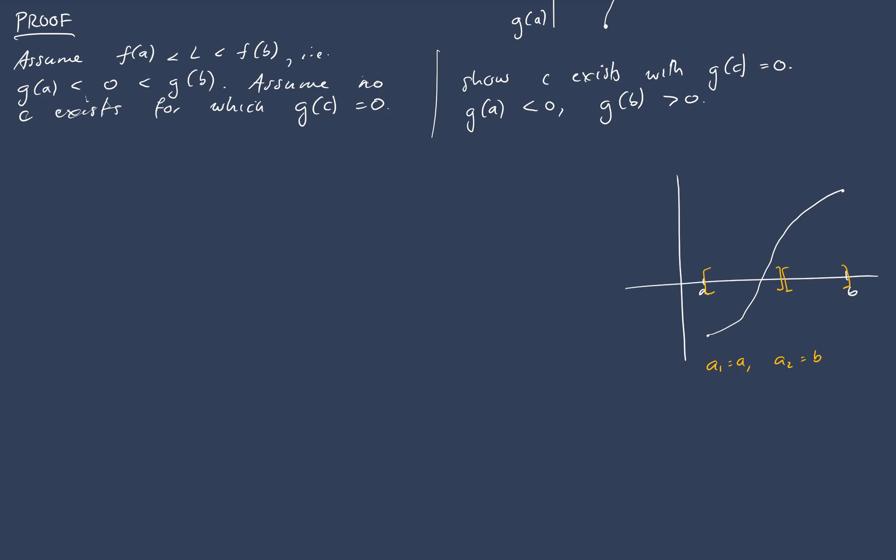This should be possible. Because we're assuming there is no point for which g(x) is equal to 0. So this midpoint here is going to be either positive or negative. If it's positive, we'll choose the left-hand one here. And if it's negative, then we'll choose the right-hand one here. So we're assuming nothing extra apart from the fact that it can't be equal to 0.